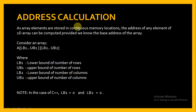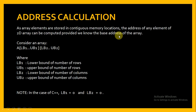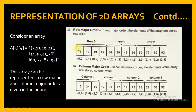Now let us see how we can calculate the address of an element in a 2D array. As array elements are stored in contiguous memory locations, the address of any element of a 2D array can be computed provided we know the base address of the array. The base address is the address where the first element of the array is stored. Knowing this, we can calculate the address of any element that follows it.